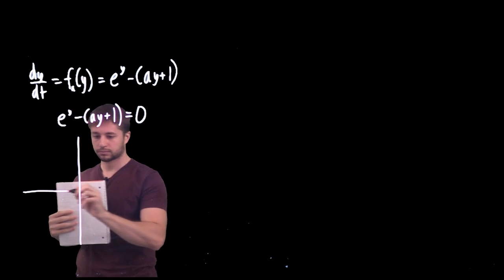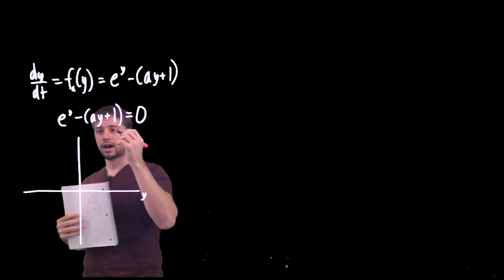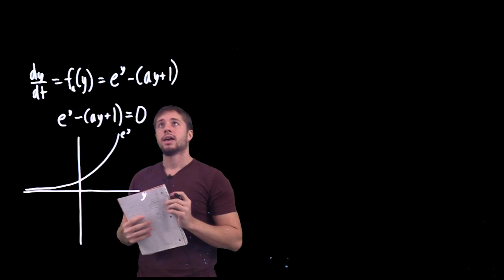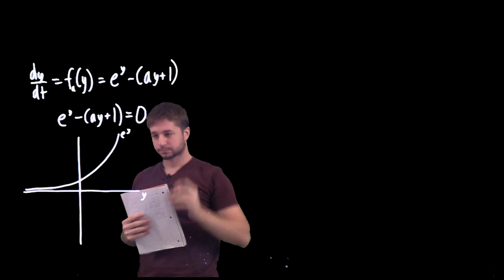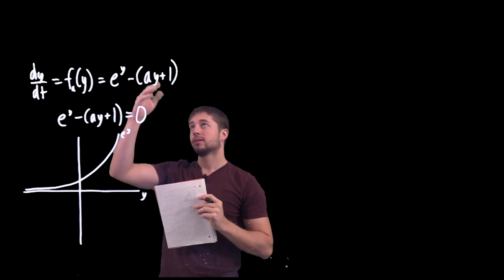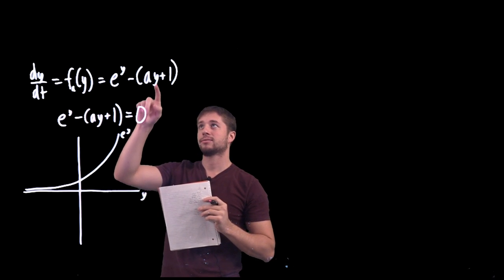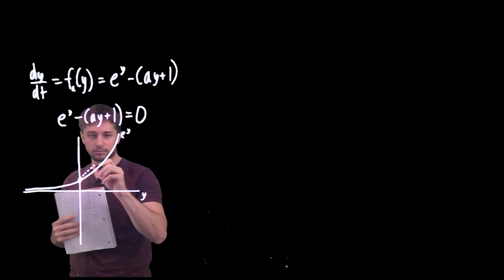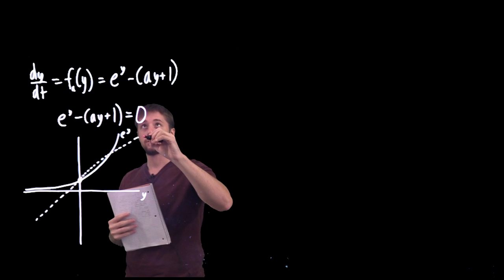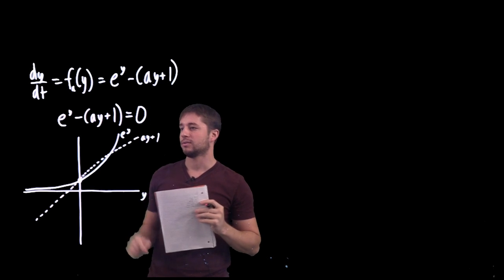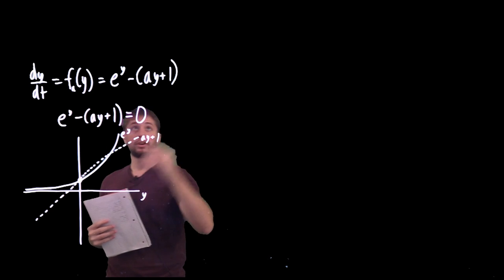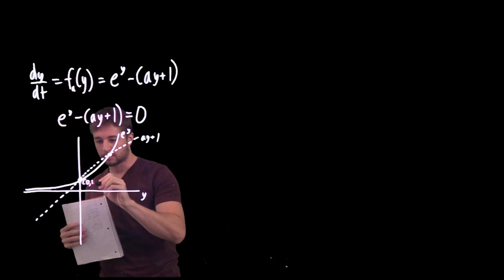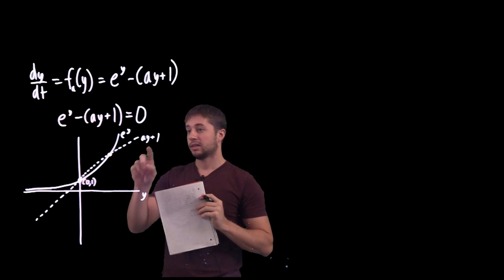So if we have y on this axis and we graph the function e^y, and then I'm also going to graph ay+1. I'd have to pick a value of a to do this, so let's just assume a is some positive number. We have a line with y-intercept 1 and some positive slope, so it might look like this. This would be a graph of ay+1 for some value of a.